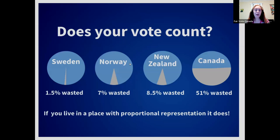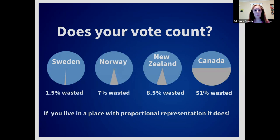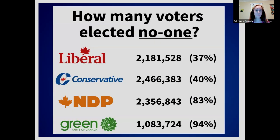If you've grown up in a winner-take-all system, it might seem normal that there has to be a winner and a loser. But that's not how most modern voting systems work. In most countries, proportional representation is used so that almost everybody can help influence the makeup of the legislature. In the last federal election, about 52 percent of voters cast ballots that didn't actually elect anyone — they were essentially symbolic.